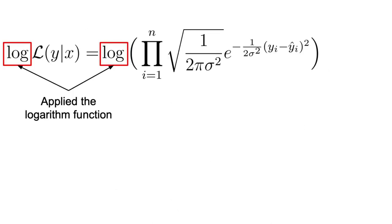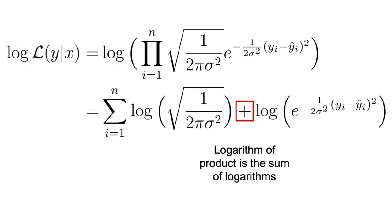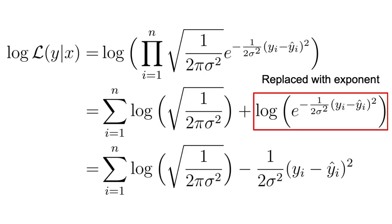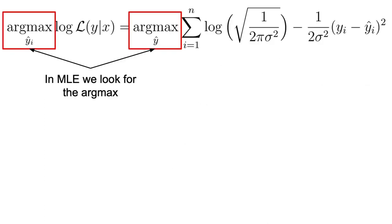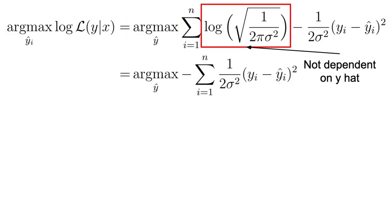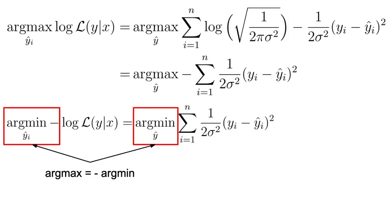We can further simplify things and take the natural logarithm of those equations. The logarithm of a product is the sum of logarithms, and the logarithm of e to the power of something is equal to the exponent. After all these transformations, we end up with something like this. Also, in this maximum likelihood estimation, we are interested in finding the y hat values that maximize this function. Since the first term in the equation does not depend on y hat, we can just simply ignore it. In addition, maximizing a function is equivalent to minimizing the negative of that function. If we apply this operation, we get something that is very close to the mean squared error.